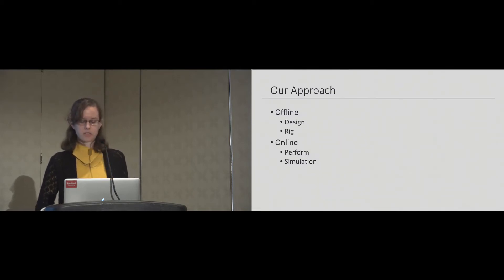Our approach has two parts: an offline portion where the user designs, draws, and rigs the character, and an online portion where the user performs the primary animation and we simulate the secondary animation. One challenge when simulating the secondary animation is that we do not know the performed primary motion ahead of time. As a result, we have to design a system that will respond to any possible primary motion in real time.